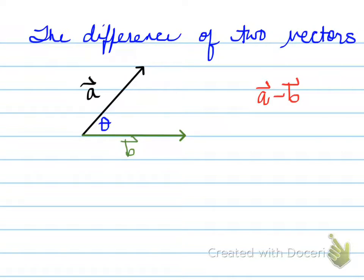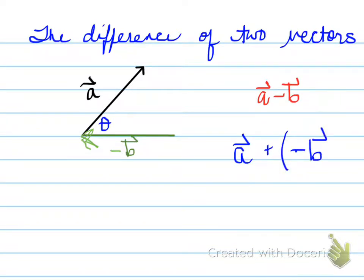The difference of two vectors — vector A minus vector B — means that vector B has changed direction. So the head now goes in the opposite direction, giving you negative B. It's like saying vector A plus negative B. Negative B is just the B vector with its direction reversed. As a result, we have our tail-to-head vector going like this — and that's vector A minus vector B.